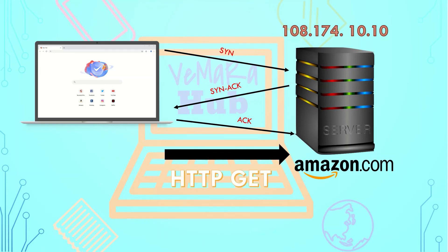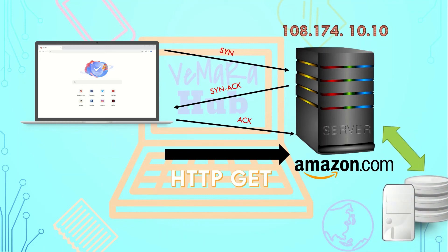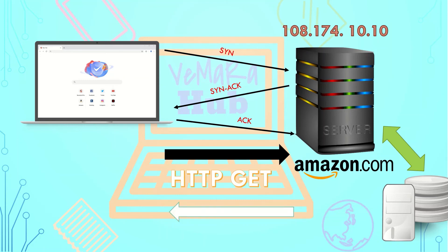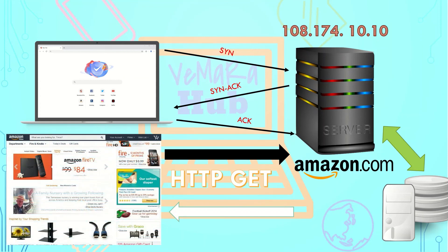Now the browser can send an HTTP GET request to the Amazon web server. If that GET request requires data from the database, the web server will connect to the database server and retrieve the data. Once the server response has been generated, the server sends back the HTTP response to the browser, and you will be able to see the Amazon website.